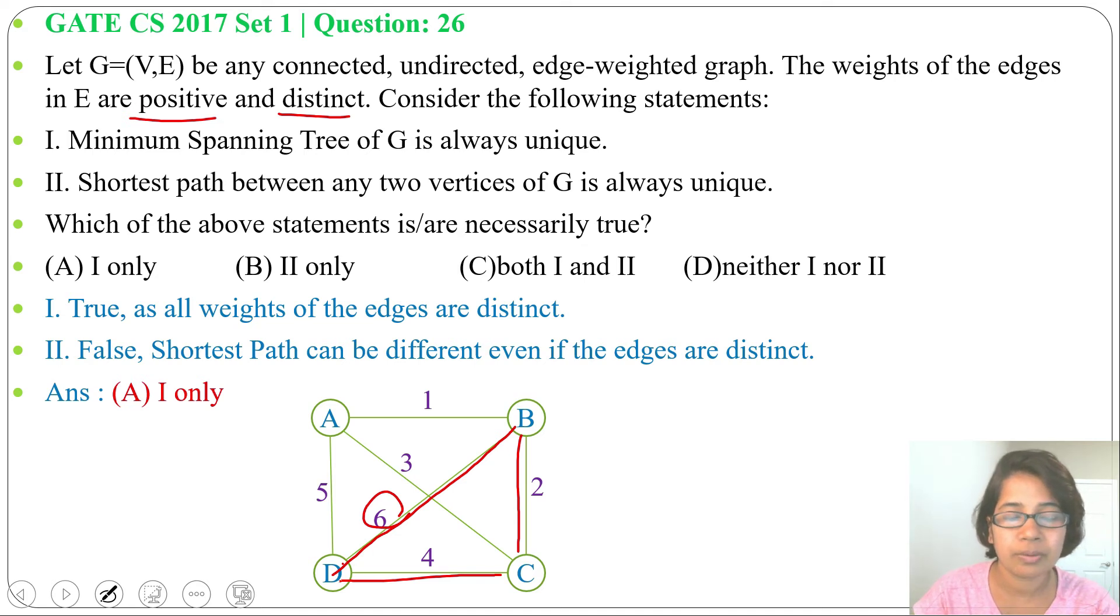So there are two shortest paths from B to D. Both weights are 6. But in statement 2, it's written shortest path between any two vertices of G is always unique. It's not always unique. There can be multiple shortest paths. So answer will be option A, one only.